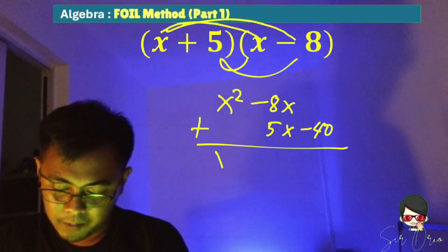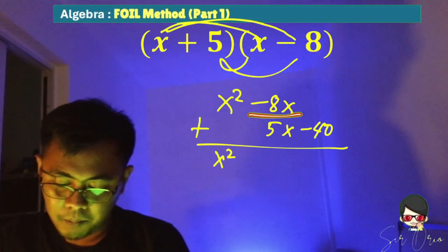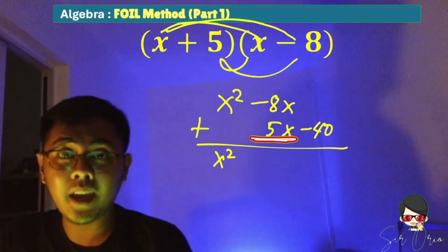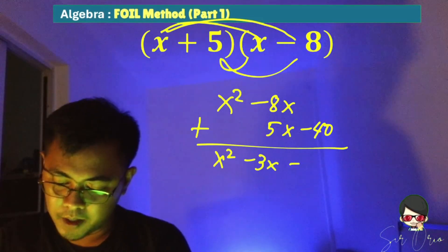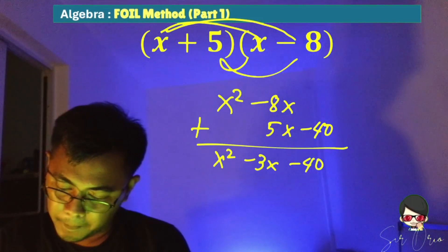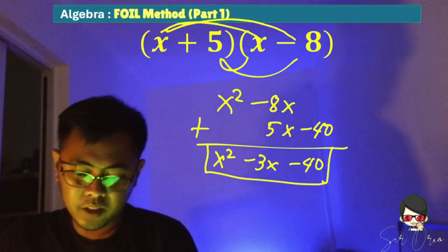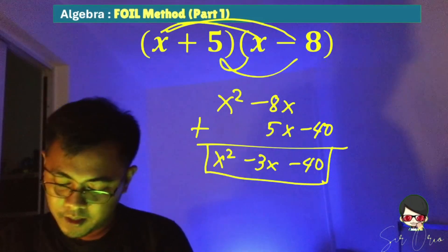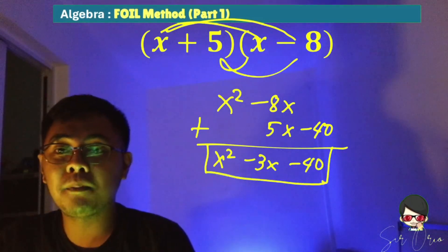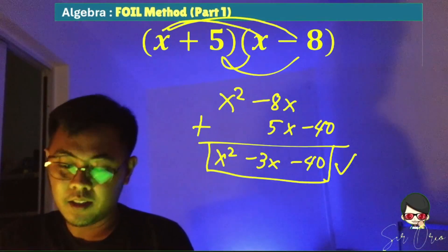Combine similar terms. So we have x squared, then negative 8x plus 5x, that is negative 3x, minus 40. So the product of the quantity x plus 5 times x minus 8 is x squared minus 3x minus 40. So this is the answer.